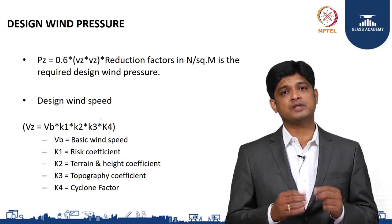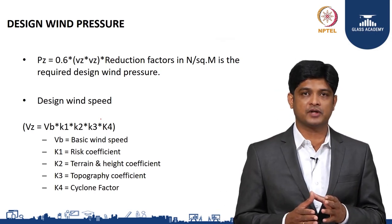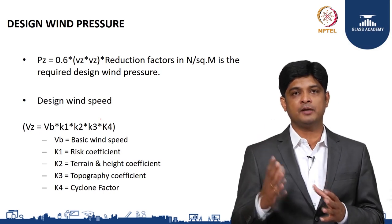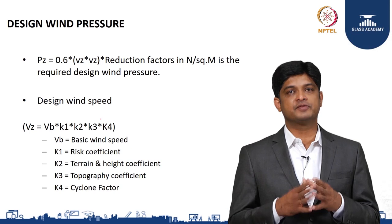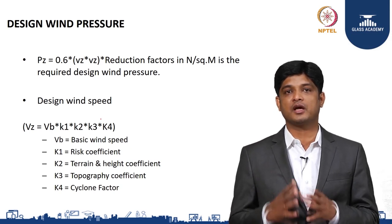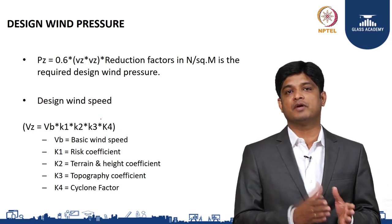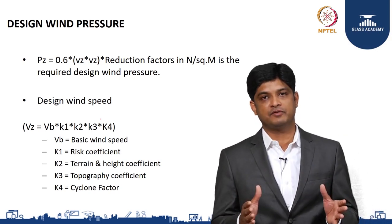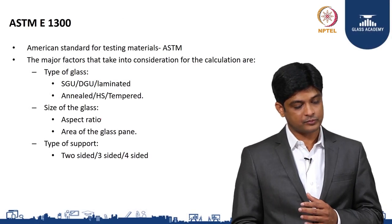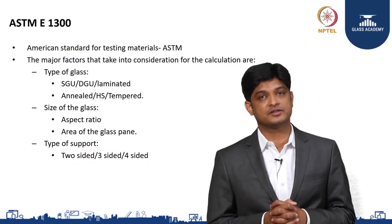The cyclone factor is location-specific — for buildings on the eastern side of the country from Trivandrum to Calcutta, the vulnerability to cyclones is very high. The cyclone factor ranges from 1.1 to 1.3, and is essentially a factor of safety to be added for buildings in these areas. Once the wind load is known, the next step is to calculate the glass thickness.